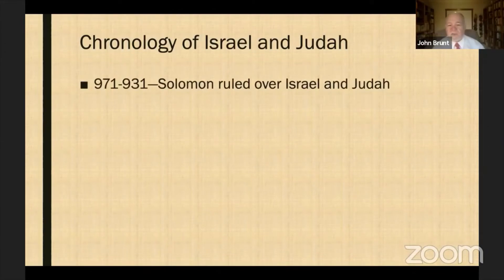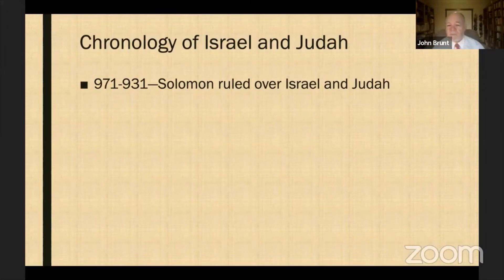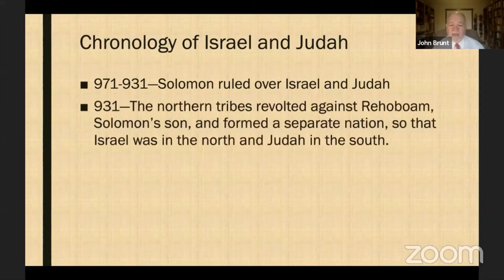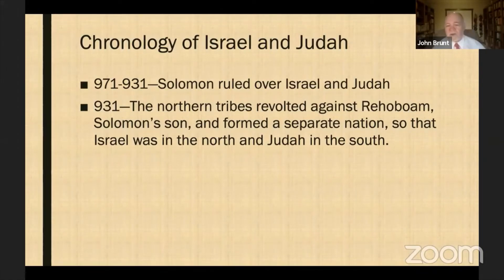Let's take a very quick tour through the chronology of Israel and Judah. From 971 to 931, Solomon — David's son — ruled over Israel and Judah. Israel refers to the ten northern tribes, and Judah to the two southern tribes: Judah and Benjamin. The northern tribe is often called Ephraim. When Solomon died, his son Rehoboam took over, but the ten northern tribes revolted under Jeroboam. So you had Jeroboam, king of Israel, and Rehoboam, king of Judah.